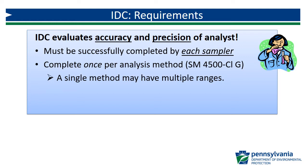One method may have multiple analysis ranges. For example, HAAC has three ranges for standard methods 4500 CLG. Completing the IDC on one analysis range is sufficient.